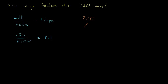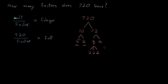So let's prime factor 720. To do that I just need to start with any two numbers that multiply together to get 720 — say 10 and 72. Neither of these is prime, so let's keep breaking them down. 10 becomes 5 and 2, both prime, so those branches end. 72 breaks into 8 and 9; 8 becomes 2, 2, 2 and 9 becomes 3 and 3. Now all branches end in prime numbers, and I've prime factored 720.